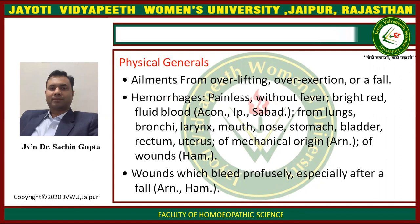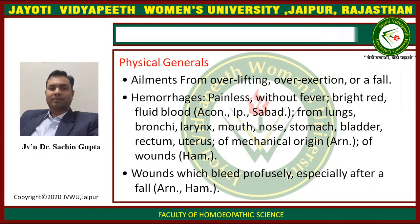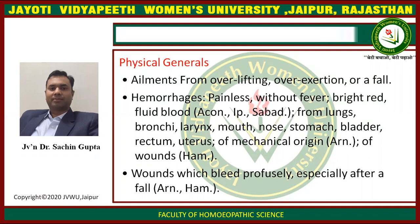Physicals: ailments from over lifting, over exertion, or a fall. Hemorrhages — painless, without fever — bright red fluid blood from lungs, bronchi, larynx, mouth, nose, stomach, bladder, rectum, and uterus of mechanical origin or wounds.